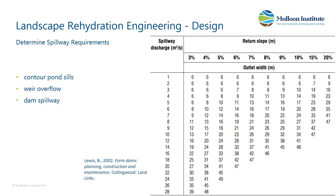The reason you do this is because one of the critical things is where you're spilling water, you need to do it safely. You want to make sure that you've got the width to spread that flow so the velocity is low where it comes out. That's where that chart on the right comes in. For that particular instance, we had 10 cubic metres per second, and depending on your slope, if it's only a gentle slope, you'd need 13 metres width to spill. And that applies to contour pond sills, spillways, and overflow weirs.